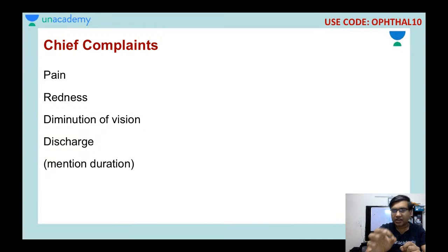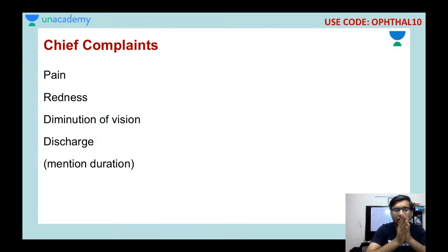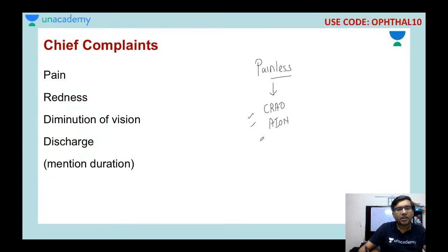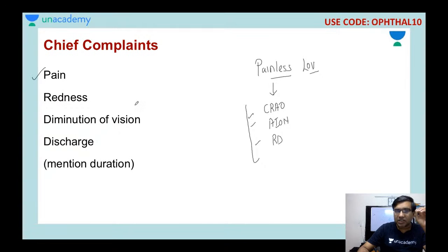Remember, every complaint can prompt a question. If you mention pain, the examiner may ask: can a patient have loss of vision without pain? The answer is yes. Causes of painless loss of vision include CRAO, arteritic AION, massive retinal detachment — these are all causes of painless loss of vision. Endophthalmitis and uveitis, on the other hand, are causes of painful loss of vision.